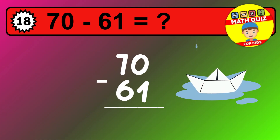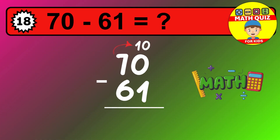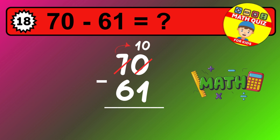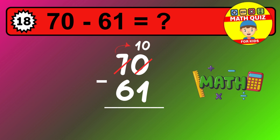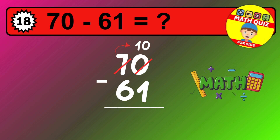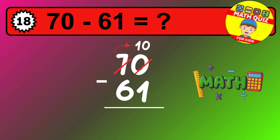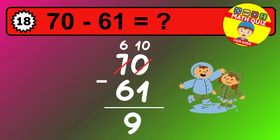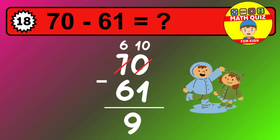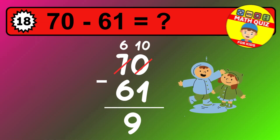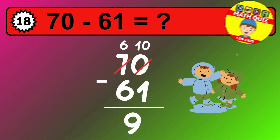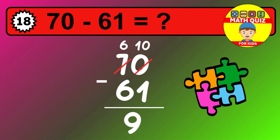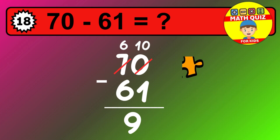Let's solve this step by step. We start with the units. Zero minus one is not possible, so we need to regroup. We take one ten from the tens column. Now we have six tens, and the units become ten. Now we subtract. Ten minus one is nine. Then we go to the tens. Six minus six is zero. The final answer is nine.